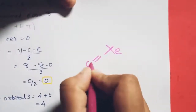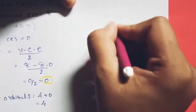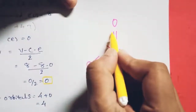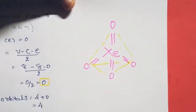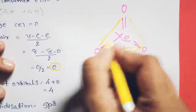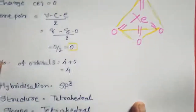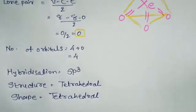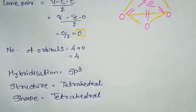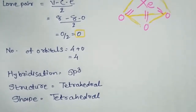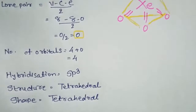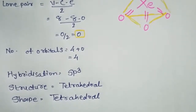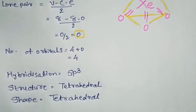For XeO₄, since lone pair of electrons = 0, the structure and shape are both tetrahedral. Xe forms double bonds with all four oxygen atoms. This completes our discussion of the structure and shape of xenon oxides — preparation, properties, and structure. Thank you for watching; please like and subscribe.